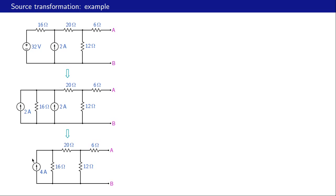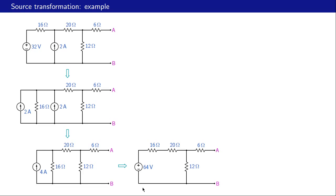We now have four amperes in parallel with 16 ohms. Next we convert this Norton form — four amps in parallel with 16 ohms — into its Thevenin equivalent. Vth is In times Rn, that is four times 16, or 64 volts. Rth is the same as Rn, that is 16 ohms. So we get 64 volts in series with 16 ohms, with the rest of the circuit.